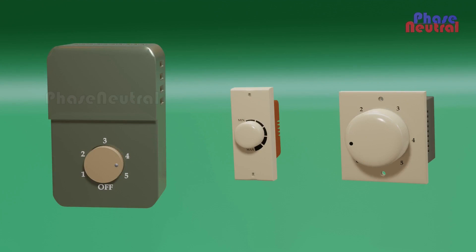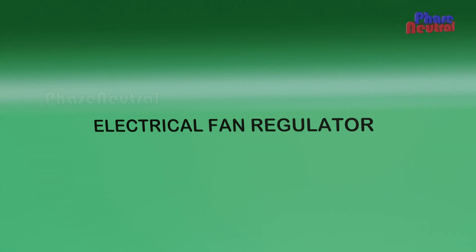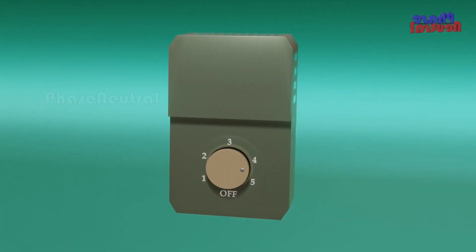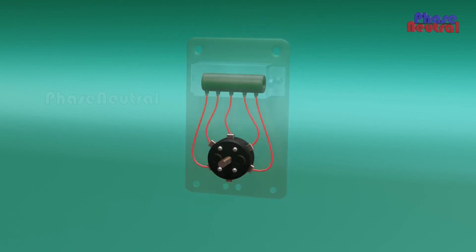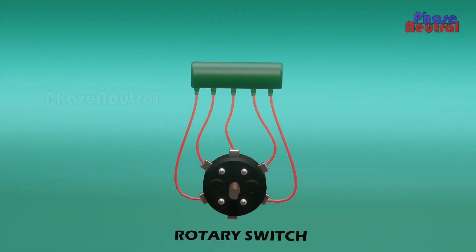Mainly three types of fan regulators are available in the market: electric fan regulator, movable type electronic fan regulator, and step type electronic fan regulator. The electrical regulator size is larger than the electronic regulator.